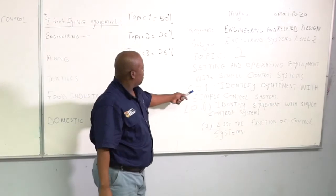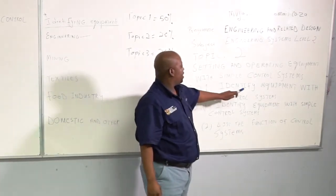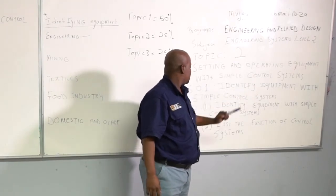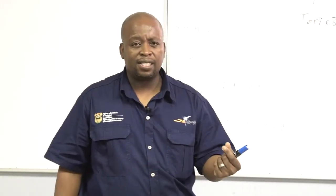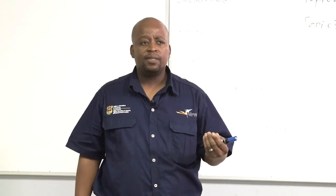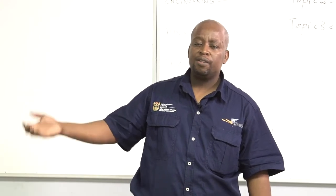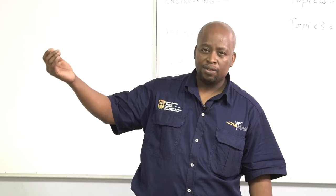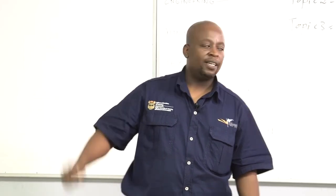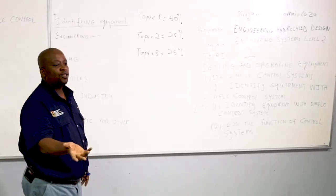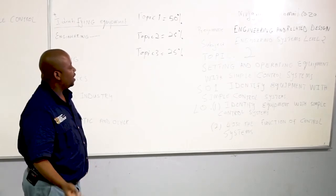The subject outcome given to us says we should identify equipment with simple control systems. One will ask the question: what is this control system? If I go to the basics where everybody understands, I will take a traffic light as an example. A traffic light is a simple control system. In the old days when we were still in preschool, we used to call it a robot. The colours are red, amber, and green. Green means go, red means stop, and amber means be cautious. A traffic light is able to control thousands and thousands of vehicles without anyone physically operating it.